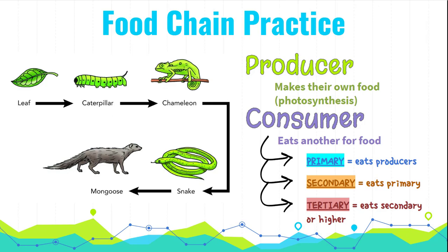Let's practice what we just learned. Here's an example of another food chain that has a leaf from a plant, a caterpillar, a chameleon, a snake, and a mongoose.